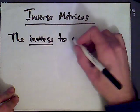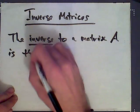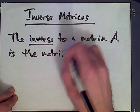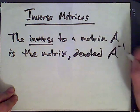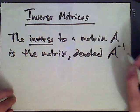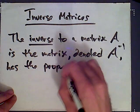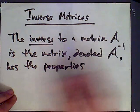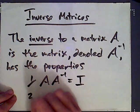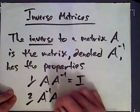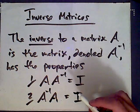The inverse to a matrix A is the matrix denoted as A inverse with a negative one in the exponent, and it has two properties. One: A times its inverse is the identity matrix. And two: the inverse of A times that matrix is also the identity matrix. So this corresponds to the similar notion for numbers we saw before.